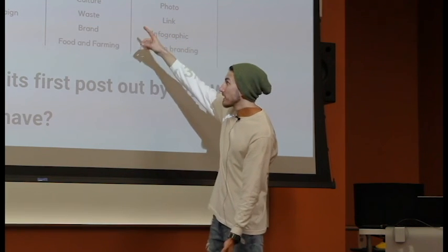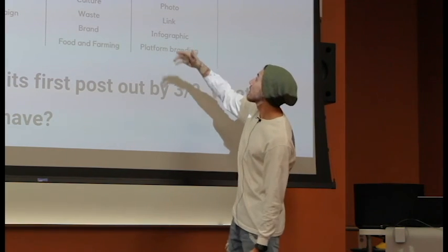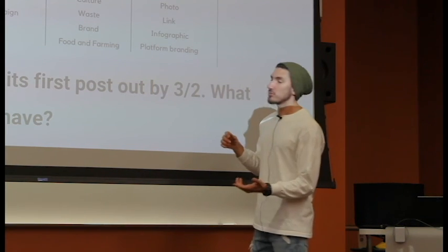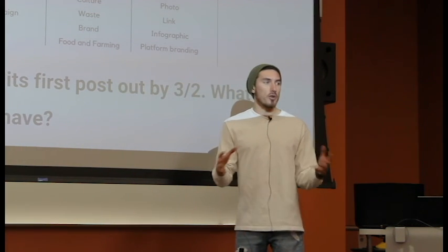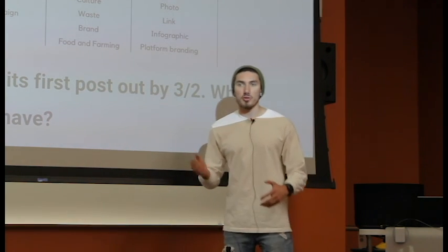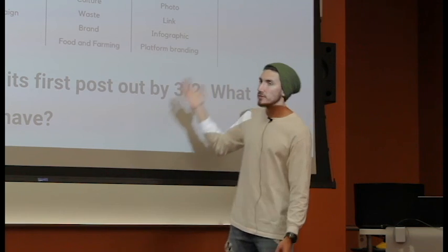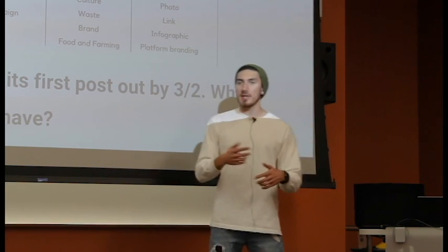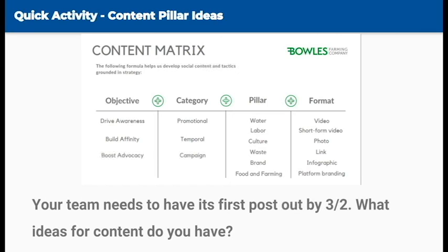Then you break that down into pillars — what will make them achieve that. For a bar, it would probably be eats, drinks, atmosphere, and the people there. For Bulls Farming — an ag-tech farm — they talk about water, labor, the workers, current policies, the culture of Bulls, the feeling while you're there, how they treat one another, waste reduction and sustainability, the brand itself with logos, and food and farming — how that food actually gets on your table. Now work with your teams and write down what you think your current content pillars could be for your playbook.